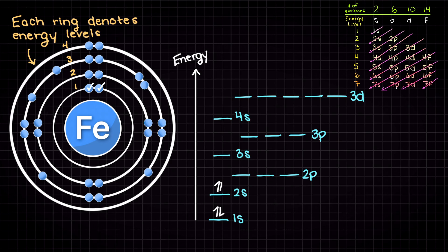Following our energy level arrows, we have the 2s subshell next, which again can hold 2 electrons. Then we move to the 2p orbitals, of which there are 3, and these orbitals can all hold 2 electrons. In total, we can place 6 electrons within these three 2p orbitals. This leaves us with 18 electrons left to place. Up next we have the 3s subshell, which again can hold 2 electrons, leaving us with 16 electrons.